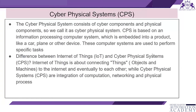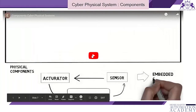A cyber physical system consists of a cyber component and physical components. The difference between the Internet of Things and cyber physical systems is that IoT connects objects and machines to the internet and to each other, while cyber physical systems are the integration of computational, networking, and physical processes.